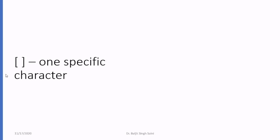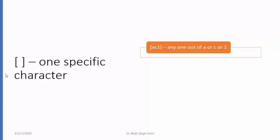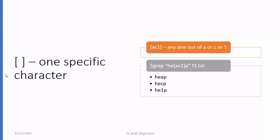Next is the use of brackets. Brackets are used if you want to restrict the occurrences to a few specific characters only. For example, if I write [ac1] within the bracket, this means I am looking for either a, or c, or 1. For instance, grep he[ac1]p means I am looking for those lines which contain heap, hecp, or he1p — nothing else.